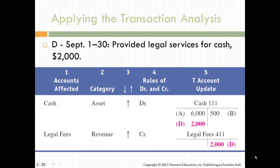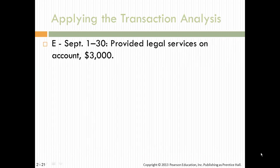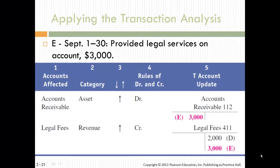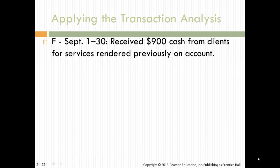On the 30th, legal services were provided. Revenue went up — that is a credit — and cash went up — that is a debit. Then legal services were provided on account, meaning the client didn't pay yet. Accounts receivable went up and revenue went up, once again on both sides of the accounting equation, so you're in balance.